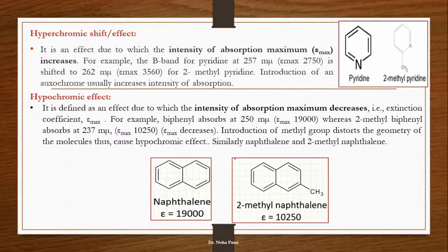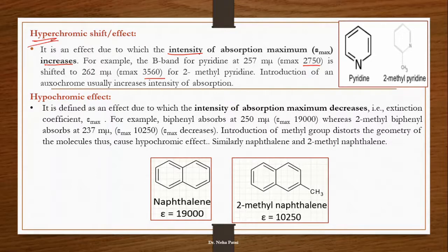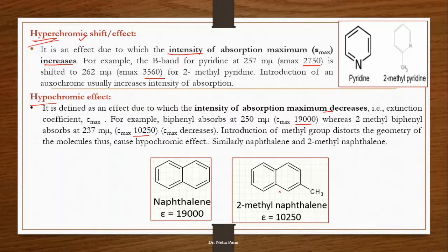When the intensity of absorption increases, it is a hyperchromic shift. 'Hyper' means high — so if the peak height increases, that is hyperchromic. Conversely, hypochromic shift means a decrease in intensity. For example, biphenyl has an epsilon of 19000, but when a 2-methyl group is added (as in 2-methylnaphthalene), it distorts the geometry and decreases conjugation, lowering intensity. So if an auxochrome stabilizes the molecule, intensity increases; if it destabilizes, intensity decreases.